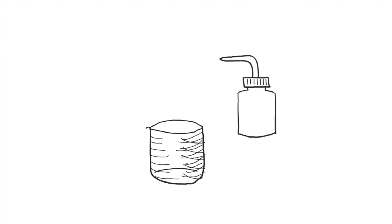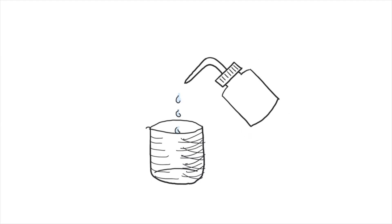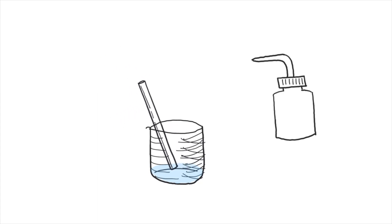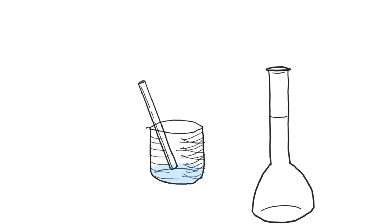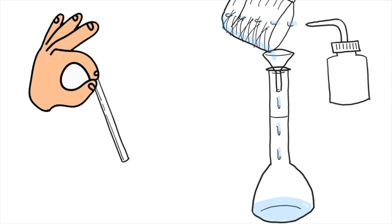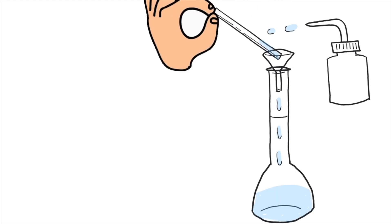Use a plastic wash bottle to add a little distilled water to the beaker, and use a glass rod to stir the mixture to completely dissolve the sodium carbonate. Keep the glass rod in the beaker at all times. Transfer the solution to a clean volumetric flask — it doesn't need to be dry as more water will be added. Use a small glass funnel for the transfer, and rinse both the beaker and the glass stirring rod with the wash bottle so all solution goes into the flask.